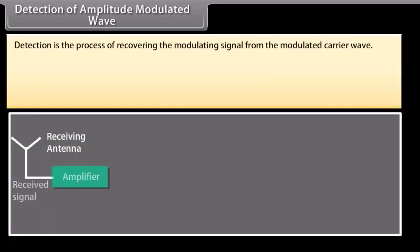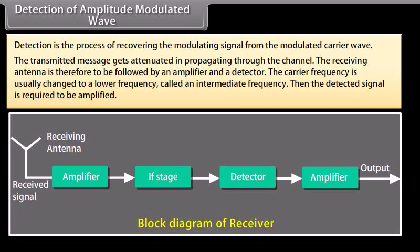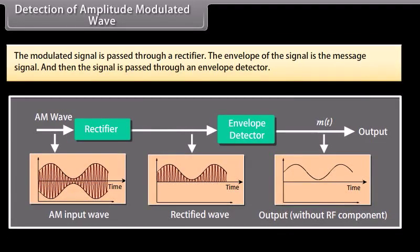Detection is the process of recovering the modulating signal from the modulated carrier wave. The transmitted message gets attenuated in propagating through the channel, so the receiving antenna is followed by an amplifier and a detector. The carrier frequency is changed to a lower intermediate frequency, and the detected signal is further amplified. The modulated signal is passed through a rectifier, and the envelope of the signal — which is the message signal — is extracted by an envelope detector.